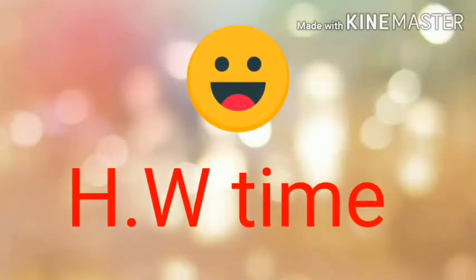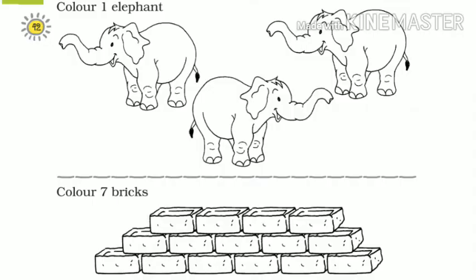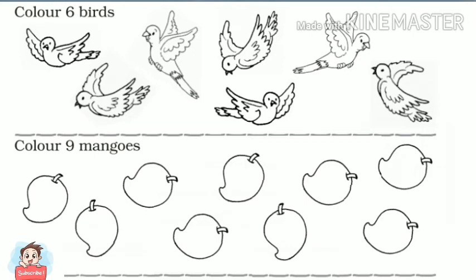Now it's homework time. This is your first homework — you have to make a group. And this is your second homework — here you have to color according to the number given. Do not color all the pictures. You have to see the number first. Like in the first question, 6 birds — you have to color only 6, not all.